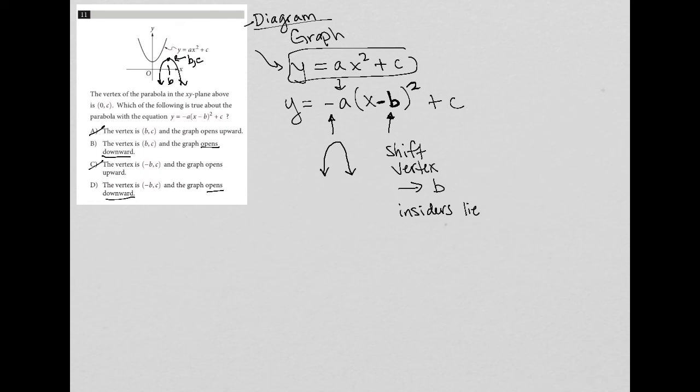Let's see, choice B says the vertex is (B, C) and the graph opens downward. That is exactly what we just described. So that must be the correct answer. Choice D, just to check it out, says the vertex is negative B comma C. So that would be a trap answer just in case you forgot about this whole insider's lie idea and you thought that that negative B meant that you shift to the left when in fact it's not true, you actually shift to the right.